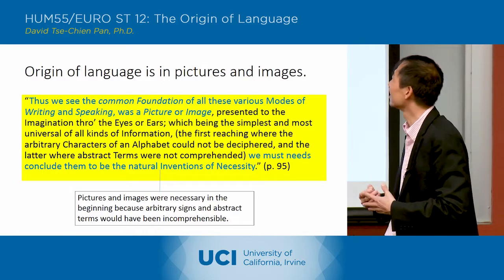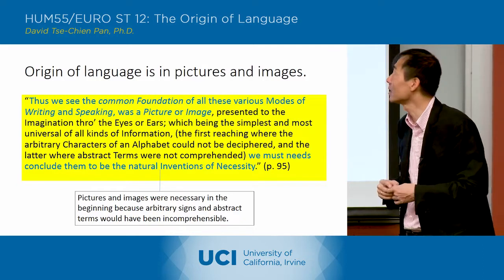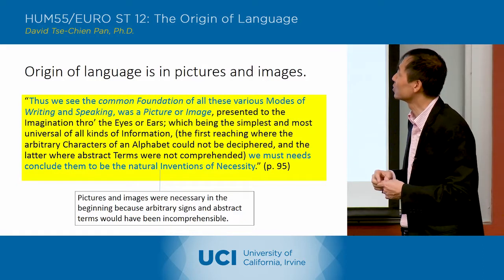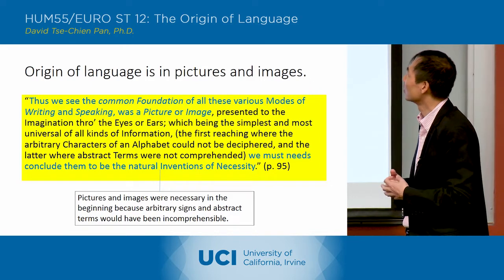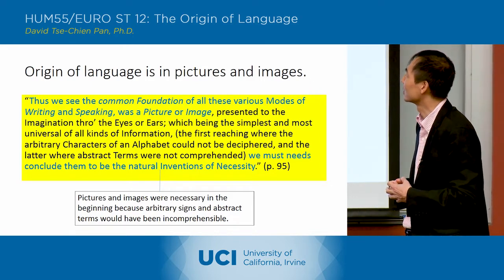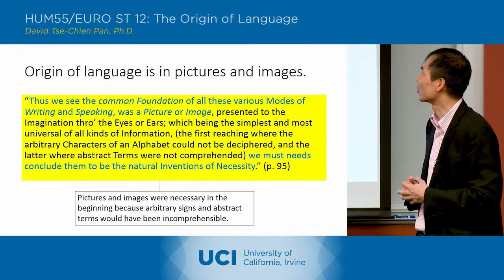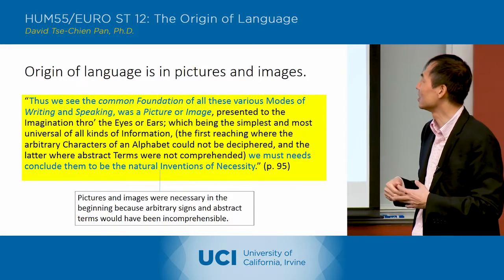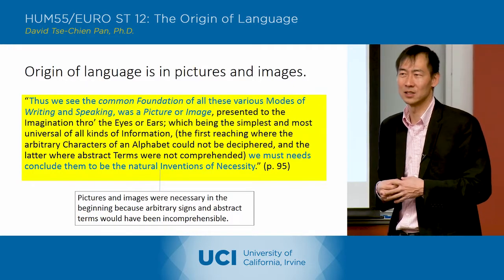The earliest language presented the imagination through the eyes or ears, which being the simplest and most universal of all kinds of information — the first reaching where the arbitrary characters of an alphabet could not be deciphered, and the latter where abstract terms were not comprehended — we must needs conclude them to be the natural inventions of necessity.